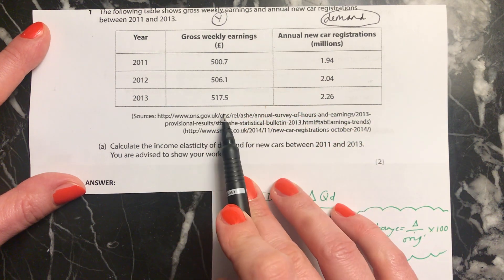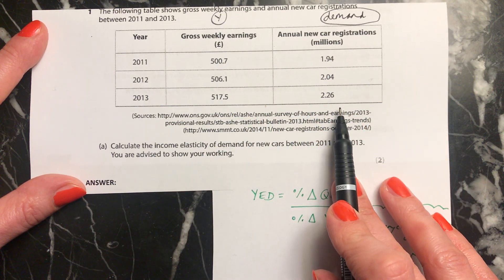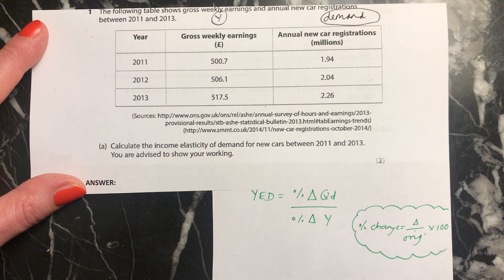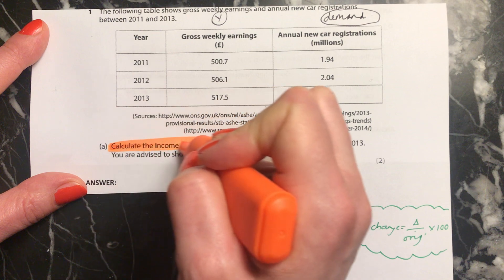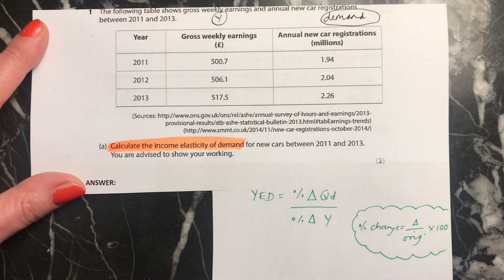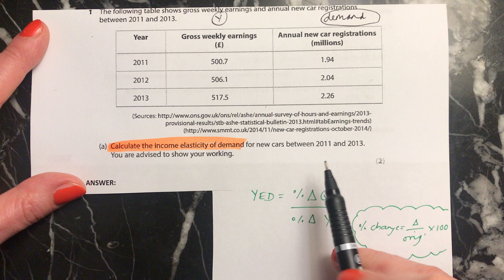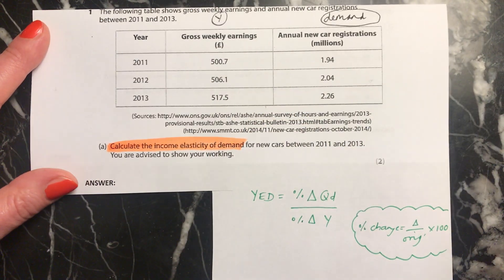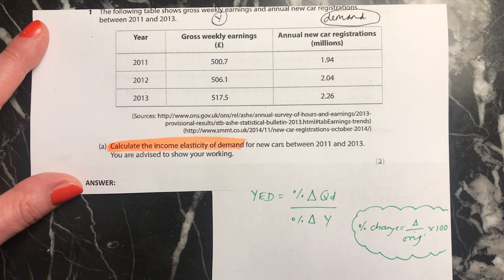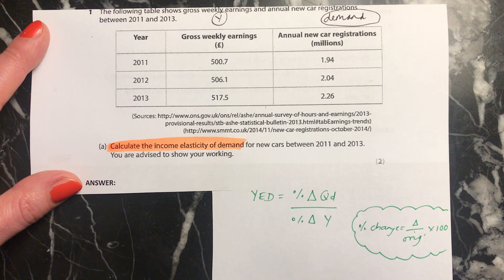The earnings — the income — are shown here, and the demand is shown in millions. You need to calculate the income elasticity of demand for new cars between 2011 and 2013, going from the beginning to the end. You're advised to show your workings in case you make a mistake, even if you think you're good at calculations.